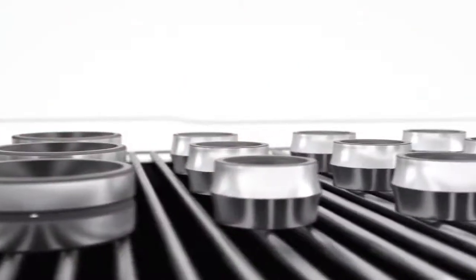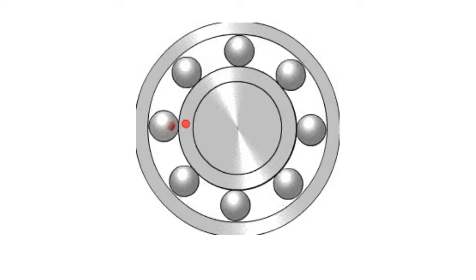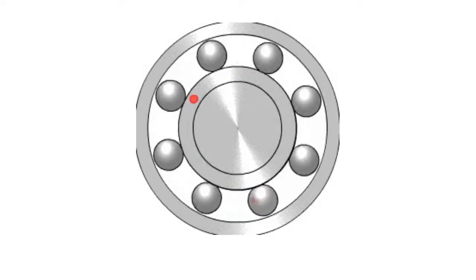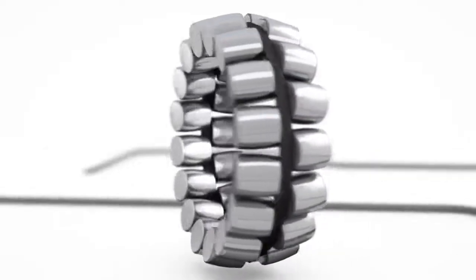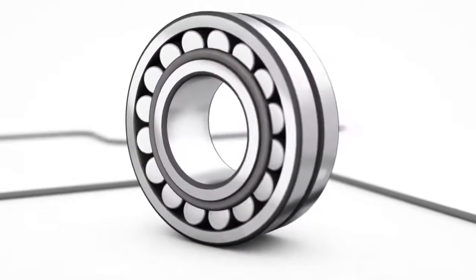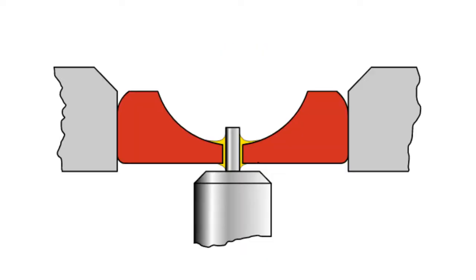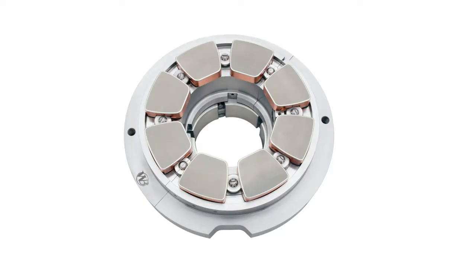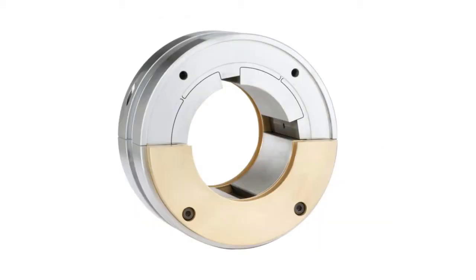Rolling element bearings, in which rolling elements placed between the turning and stationary races prevent sliding friction, have two main types: ball bearings, in which the rolling elements are spherical balls, and roller bearings, in which the rolling elements are cylindrical, taper or spherical rollers. Other types include dual bearings, a plane bearing in which one of the bearing surfaces is made of an ultra-hard glassy material such as sapphire to reduce friction and wear; fluid bearings, a non-contact bearing in which the load is supported by gas or liquid; magnetic bearings, in which the load is supported by a magnetic field; and flexure bearings, in which the motion is supported by a load element which bends.